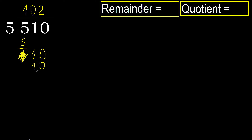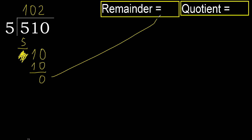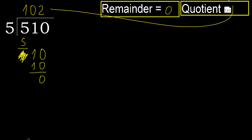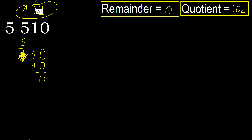It's not greater, ok? 10 minus 10 equals 0. Next — that is not numbered, therefore finished. 510 divided by 5 is 102.